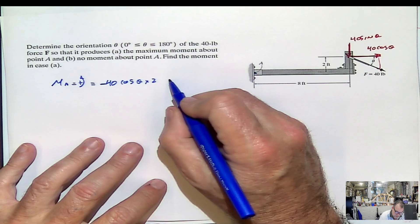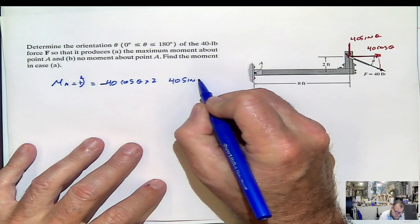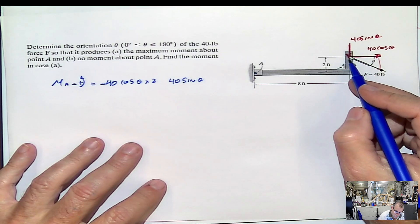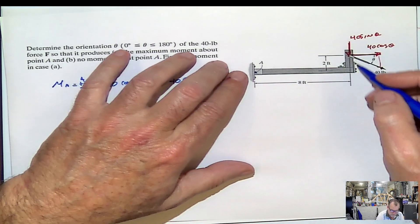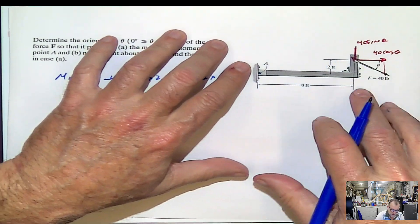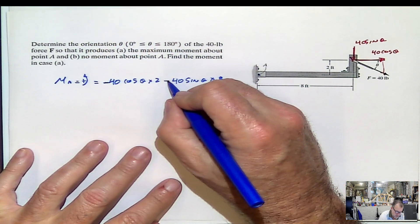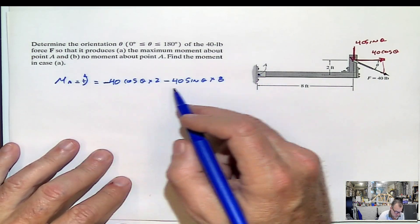And this other one is going to be 40 sine of the angle, multiplied by 8. And once again, if I push it in this direction, it's going to be rotating clockwise, which is opposite to what we say here. So that would be the function.